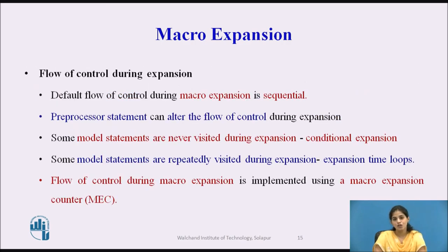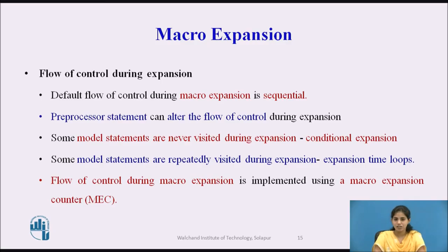The default flow of control during macro expansion is sequential — model statements are visited sequentially. When preprocessor statements appear in the macro definition, they alter the flow of control. Some model statements may never be visited — this is called conditional expansion. Some model statements may be repeatedly visited — this is called expansion time loops. Flow of control is implemented using the Macro Expansion Counter (MEC).